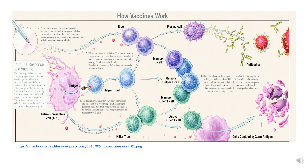One of the immune cells it's able to activate is an antigen presenting cell. This cell takes up the vaccine and can chew it up into small pieces and present the small pieces of the vaccine in terms of peptides